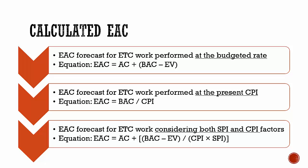The first EAC forecast assumes that ETC work will be performed at the budgeted rate. This EAC method accepts the actual project performance to date, whether favourable or unfavourable, and predicts that all future ETC work will be accomplished at the budgeted rate. Simply speaking, whatever happened so far, since today we will perform according to the plan.